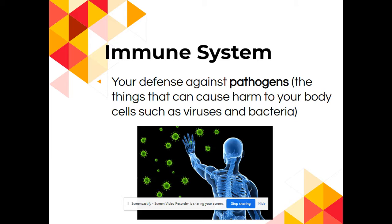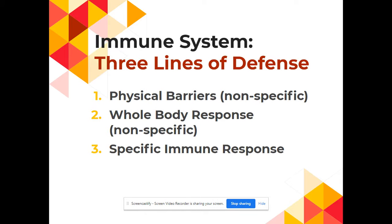Our immune system is there to help protect us against pathogens. Pathogens are anything that can cause harm to your body — we've got viruses as well as different kinds of bacteria. We basically have three lines of defense. The first line of defense is a physical barrier, not specific to any kind of pathogen. The second line of defense is a whole body response, also non-specific. Tomorrow we'll learn about the specific immune response.